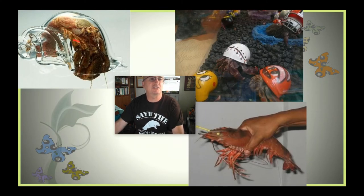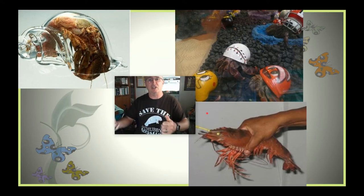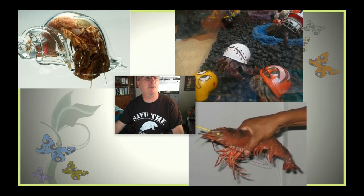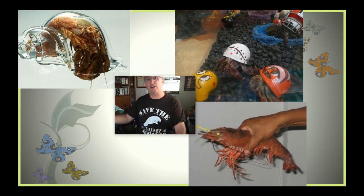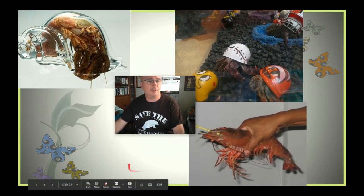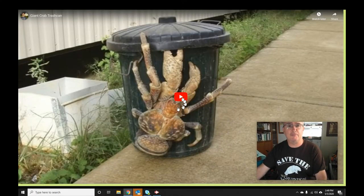Hermit crabs use shells for protection. Here's a hermit crab in a glass shell where you can see the abdomen. Hermit crabs live in shells because their abdomen is not protected by a hard exoskeleton — it's very soft and vulnerable. They find shells from gastropod mollusks and hide their abdomen inside for protection. As the hermit crab grows, the shell does not grow, so they have to find a new one.